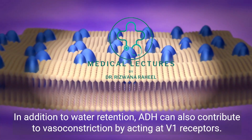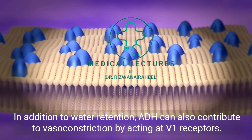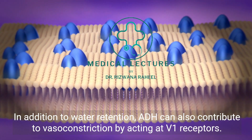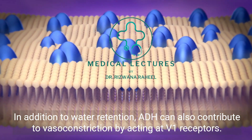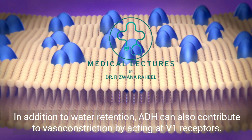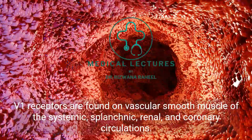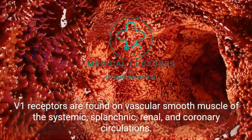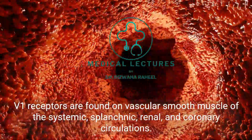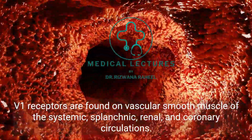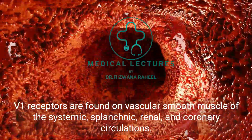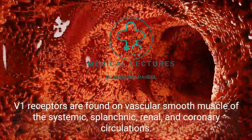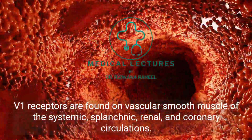In addition to water retention, ADH can also contribute to vasoconstriction by acting at V1 receptors. V1 receptors are found on vascular smooth muscle of the systemic, splanchnic, renal, and coronary circulations.